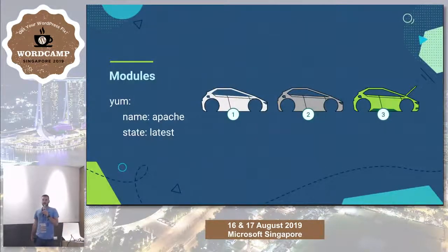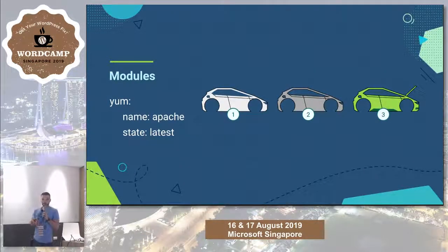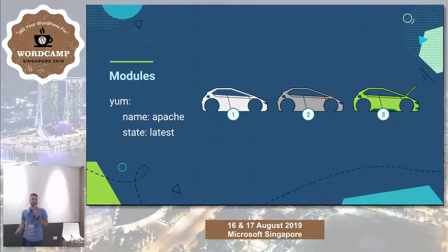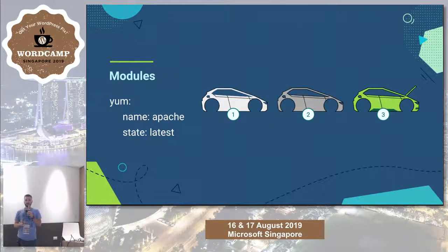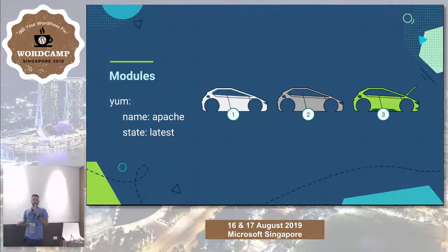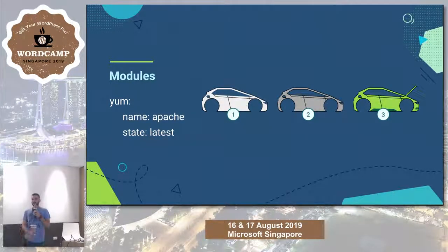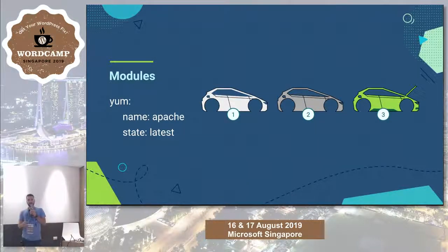In a car factory there are many machines, each doing something specific — that's exactly what modules are in Ansible. Modules are small programs designed to perform simple tasks, based on parameters we pass in our configuration files. There are hundreds of modules listed on the Ansible site, and if a service you use has no module, you can write your own.